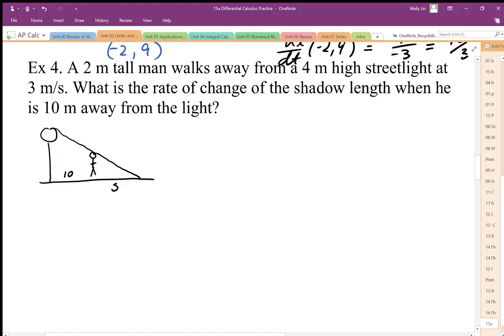And we've been given that he walks away from the streetlight at 3 meters per second. So this distance we'll call X. And we'll say that this must then be dx by dt. So what we want to then find out based on this scenario is what is dS by dt?